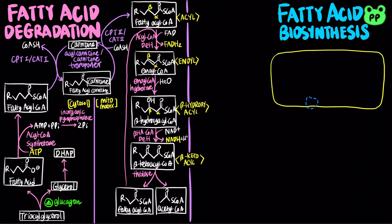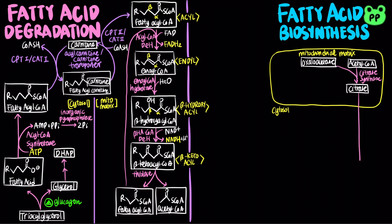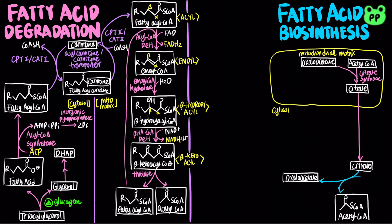Fatty acid biosynthesis occurs in the cytosol. Therefore, acetyl-CoA needs to be transported from the mitochondrial matrix back into the cytosol. First, citrate synthase from the citric acid cycle condenses acetyl-CoA derived from pyruvate or beta-oxidation with oxaloacetate to form citrate, which passes through the inner mitochondrial membrane and enters the cytosol, where it is reconverted back into oxaloacetate and acetyl-CoA by citrate lyase, coupled to the hydrolysis of one ATP to ADP and inorganic phosphate. Oxaloacetate is reduced to malate, which can return to the mitochondrial matrix and reconvert to oxaloacetate.